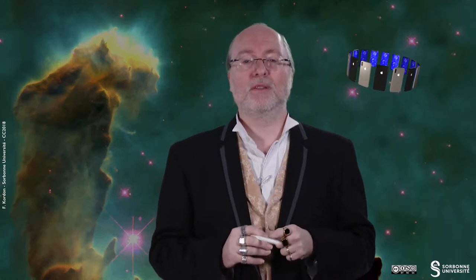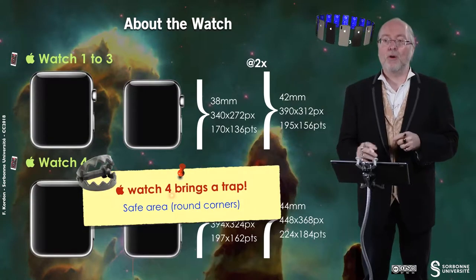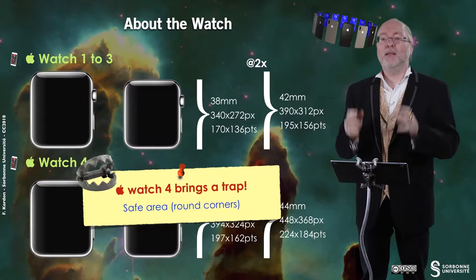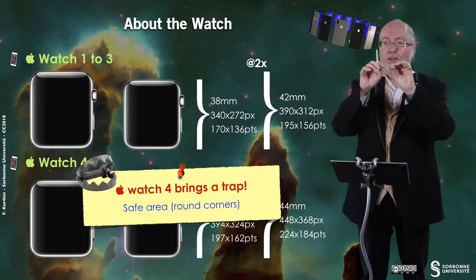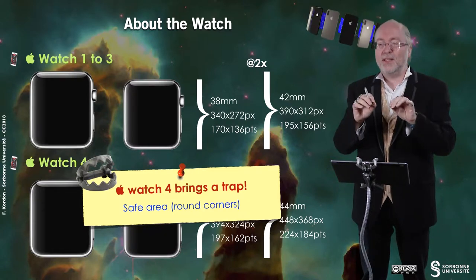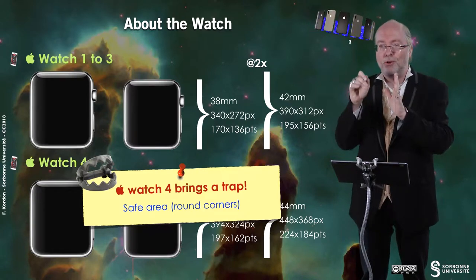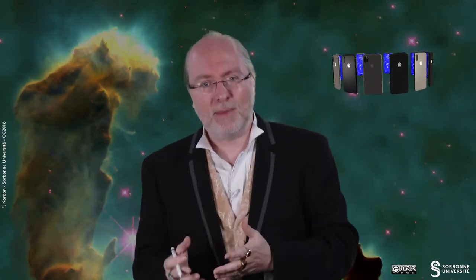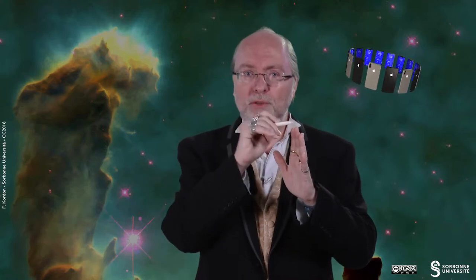And there is a trap: the Apple Watch 4 brought round corners on the screen. So, like for the iPhone X, XR, XS, and XS Max, you have this notion of a safe area that is of importance, because if you put some information right on the corner, it will be partially clipped.